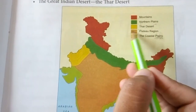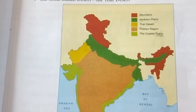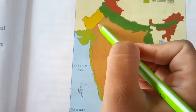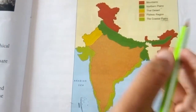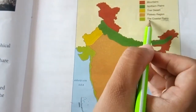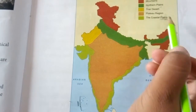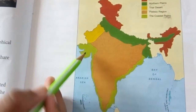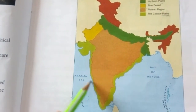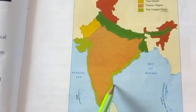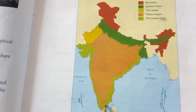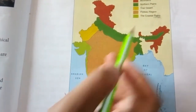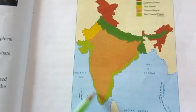The plateau region is shown in light brown colour. This entire area is the plateau region. The coastal plains are shown in light green colour. Here you can see in this map of India, this is the coastal plains.